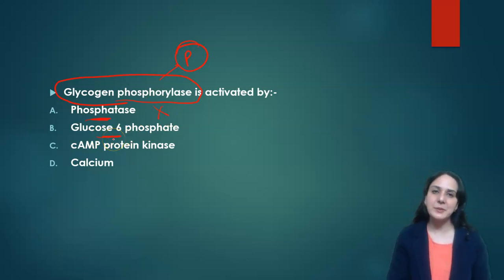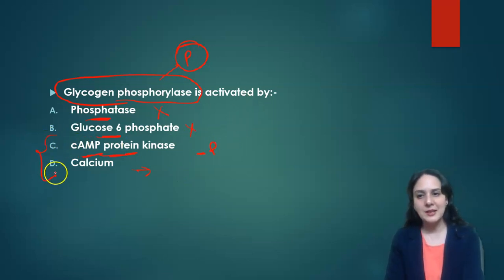Glucose 6-phosphate is the end product of glycogenolysis. So the end product always inhibits the enzyme, so it is also not the answer. Cyclic AMP protein kinase is a mediator which increases glycogen phosphorylase, but it needs to be mediated through hormones like glucagon and epinephrine which will increase cyclic AMP.